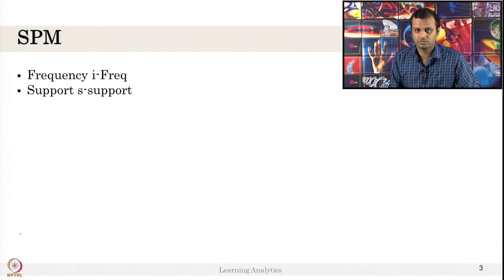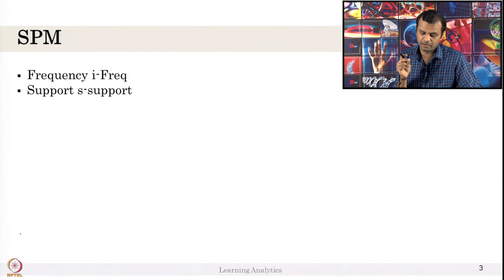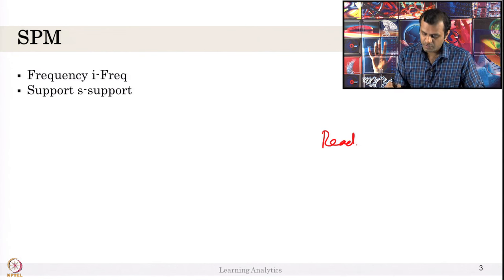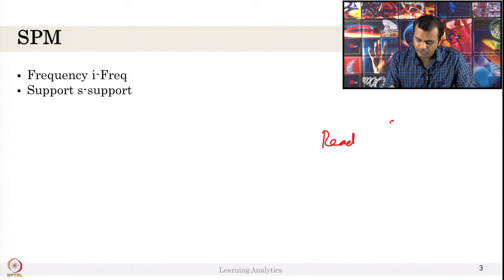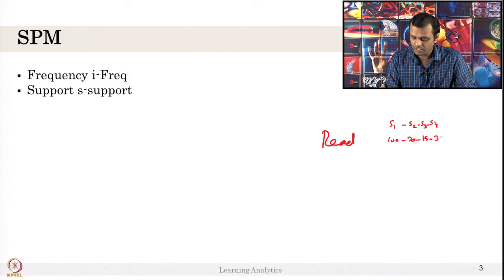Consider you have 60 students and you identified patterns. The patterns can be just a single action — for example, an action called 'read'. A single unary action can also be a pattern. Suppose you have only 4 students; it might have occurred 100 times, 20 times, 15 times, and 35 times. The S support will be 4 out of 4, so S support value is 1.